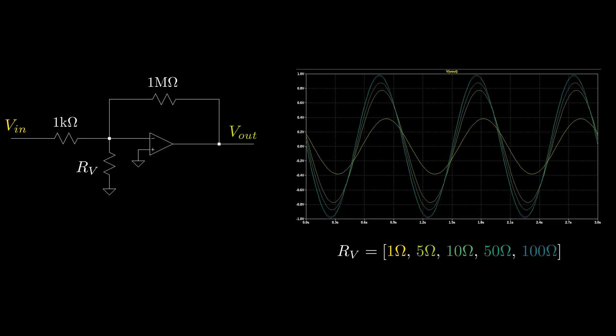If we look at Rb, we can show a similar plot. Again, once the resistance is above a certain value, in this case about 100 ohms, it has no noticeable effect on the amplifier.